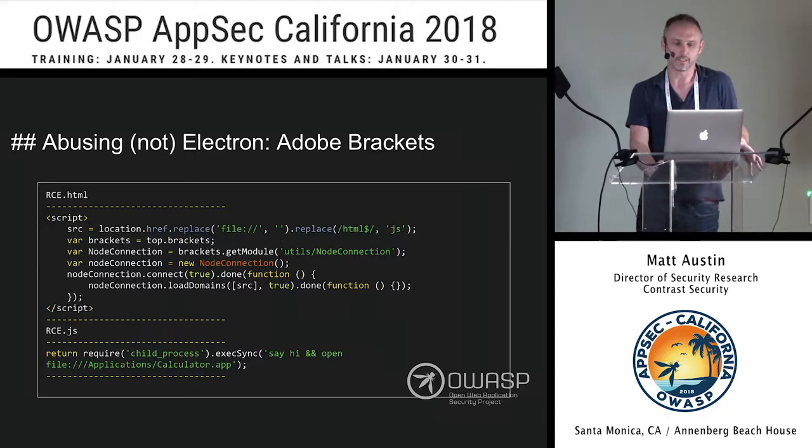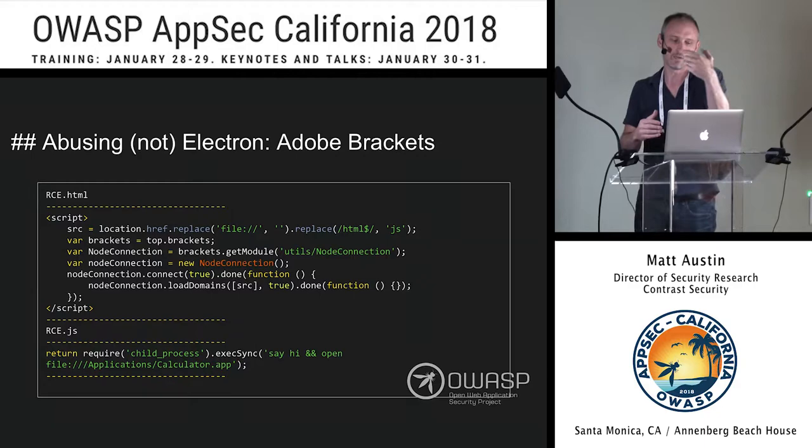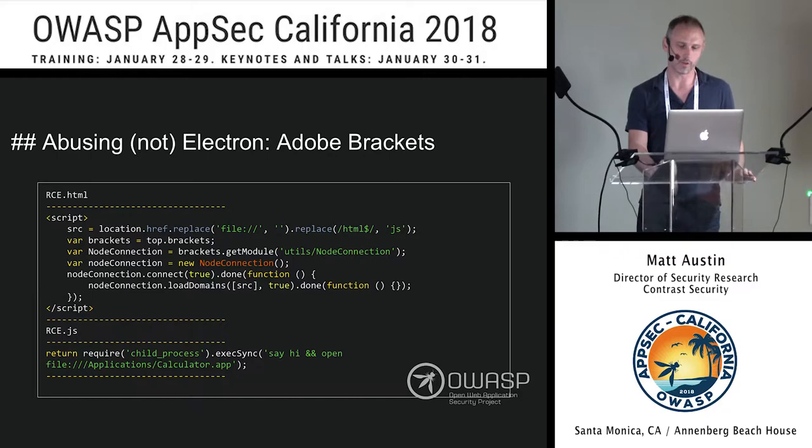Adobe Brackets is really similar except it technically doesn't use Electron. Same overall approach, same file:// approach. It has a custom integration — an embedded Brackets thing — and you had to connect to a module to get access to Node. It's a little more complex, but overall the same. Once you get your Node object by creating a fake plugin object, you can execute code.